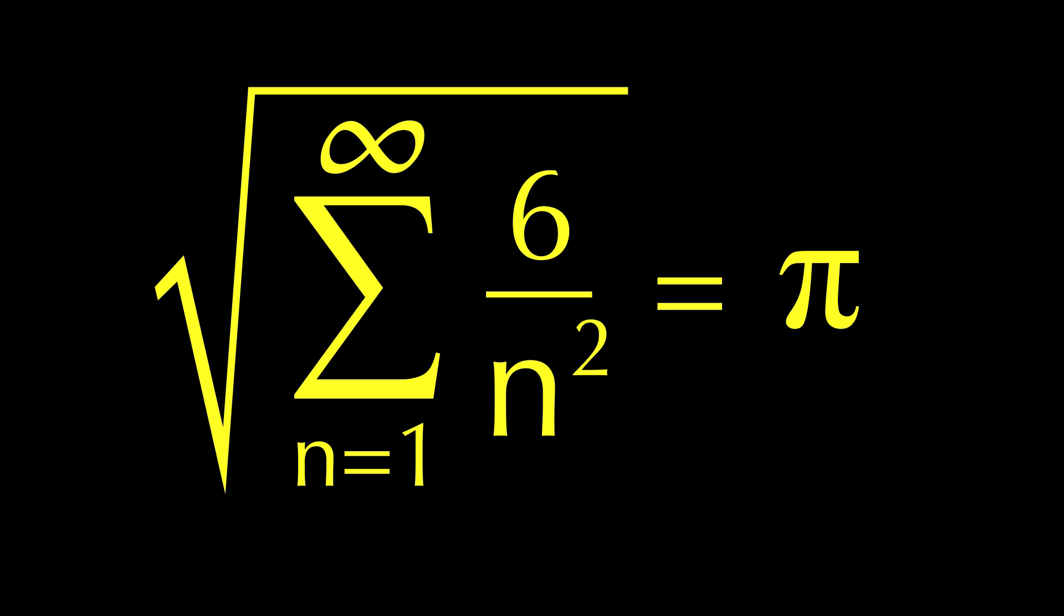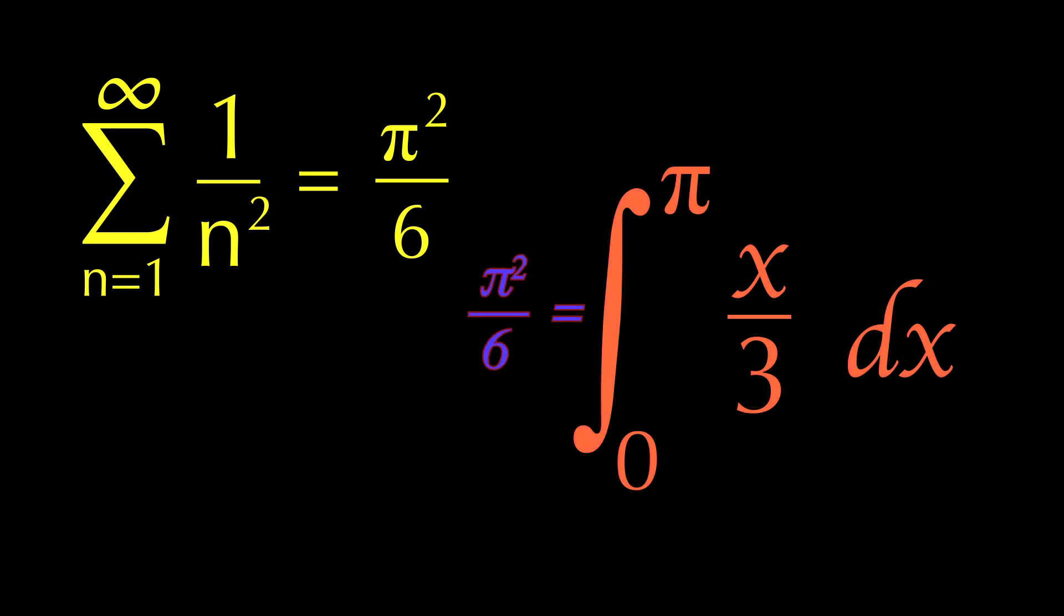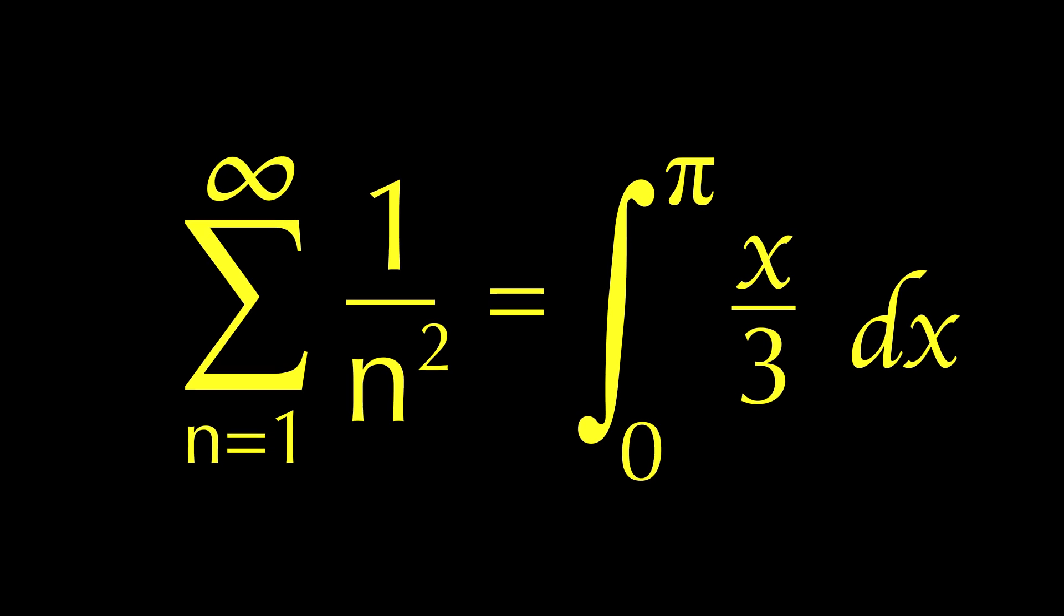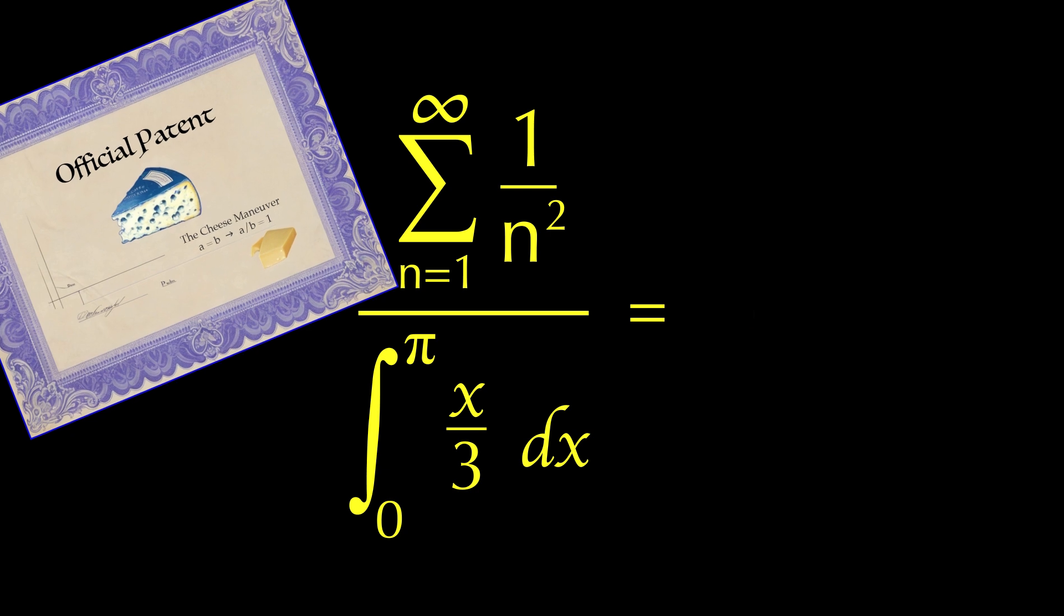I however wanted to do something slightly different. So I decided to come up with this rather basic integral, which of course also equals to our Basel number, which means those two things are equal to one another. And using my patented cheese maneuver, we can divide this by this to get 1.